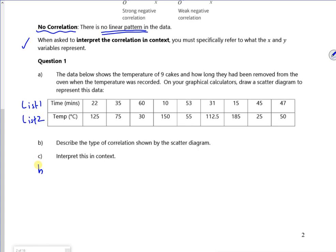So B says to describe it. So it's a negative correlation. C says to interpret it in context. So what does it actually mean there? So we've got a temperature of 9 cakes and how long they've been removed from the oven. So you kind of think that makes sense, doesn't it? The longer that the cakes are outside of the oven, the cooler they're going to get.